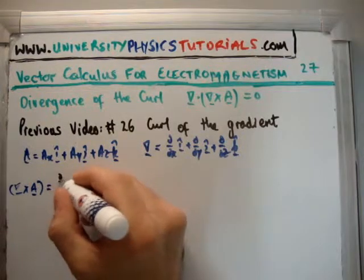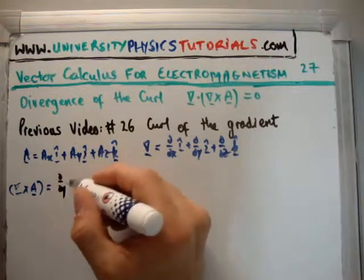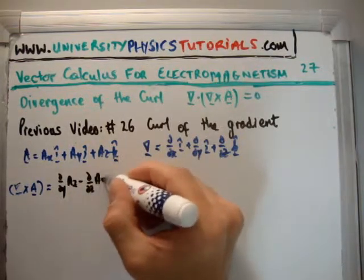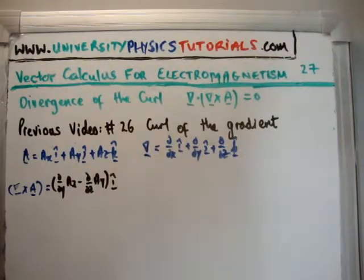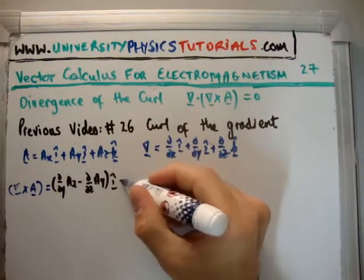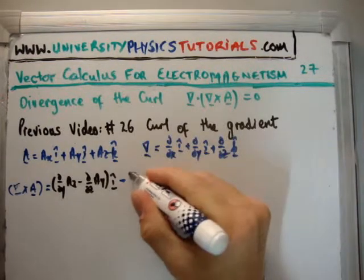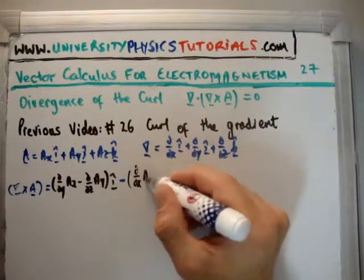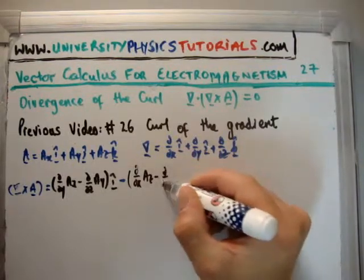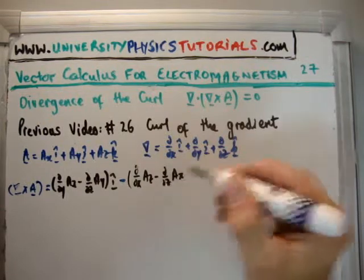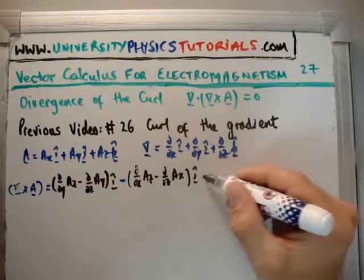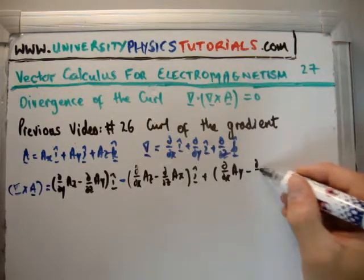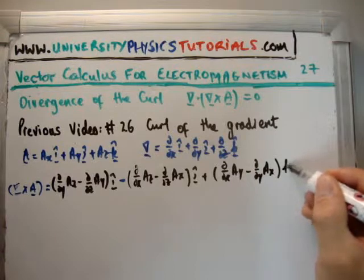So what we're going to have here is del del y, A sub z, minus del del z, A sub y, and that's in the i-hat direction. Then for a convention that I like, I put the minus sign here, and we have del del x, A sub z, minus del del z, A sub x. That's in the j-hat direction, plus del del x, A sub y, minus del del y, A sub x in the k-hat direction.